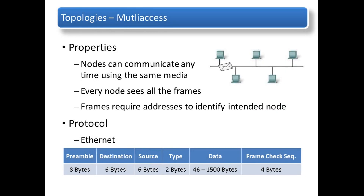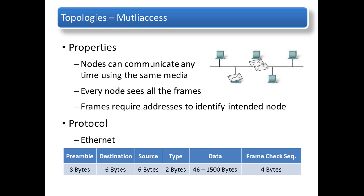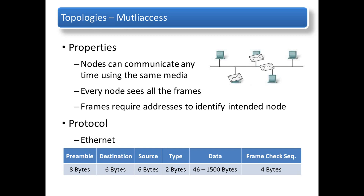In a multi-access topology, every node receives the frame, but only the node to which the frame is addressed processes its contents. Having many nodes share access to the medium requires a data link MAC method to regulate the transmission of data and thereby reduce collisions between different signals. The MAC method used by logical multi-access topologies is typically CSMA/CD or CSMA/CA. The Ethernet protocol is an example of a multi-access data link layer protocol.